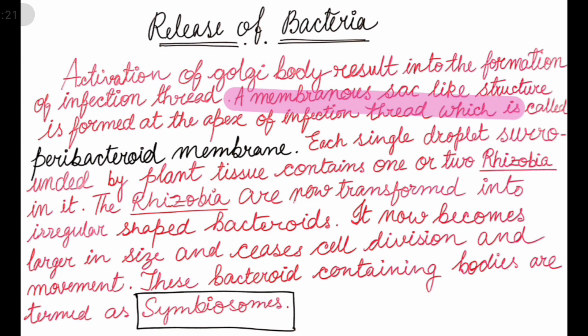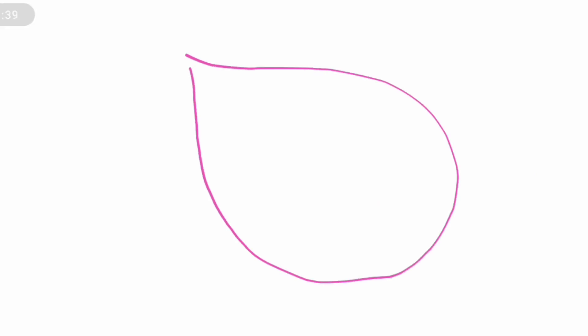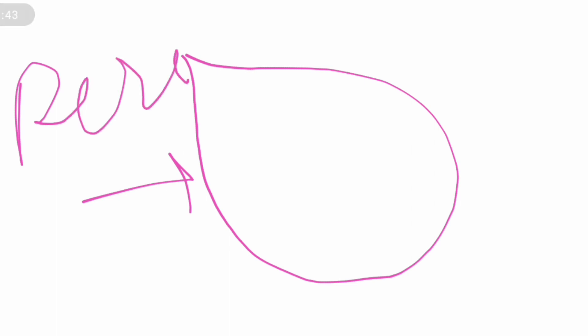A membranous sac-like structure is formed at the apex of the infection thread. This structure grows larger, and we call this the peribacteroid membrane.